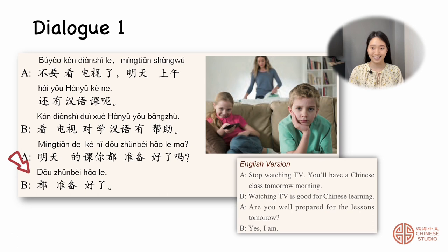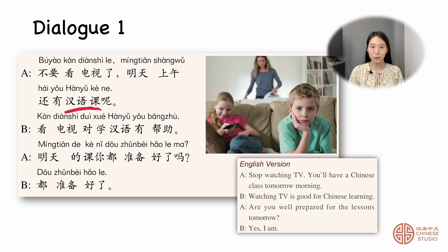Now I want to explain some terms. 看电视 — watch television. 汉语课 — Chinese class. 有帮助 — helpful. 准备 — to prepare.